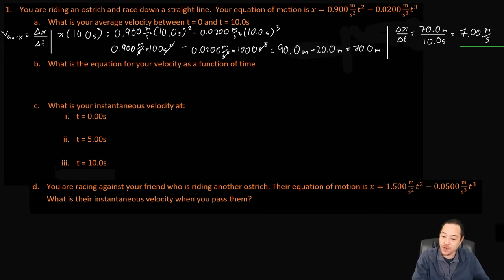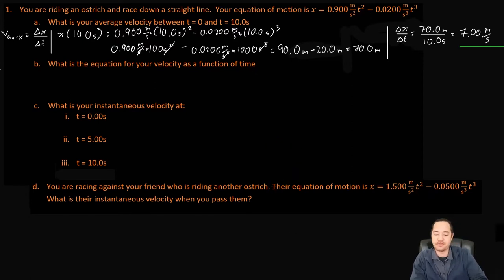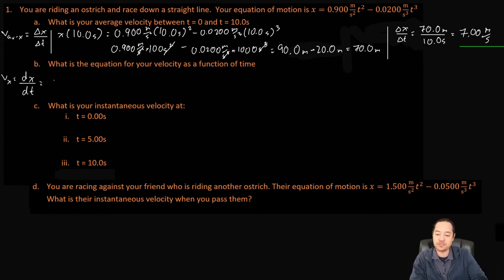Let's look at part B. What is the equation for your velocity as a function of time? Remember, velocity is equal to the derivative of the x position with respect to time. So we have to take the derivative of the equation of motion.